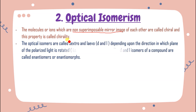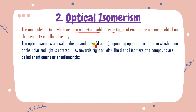For optical isomerism to be shown, there must be non-superimposable mirror images and chirality. The optical isomers are called dextro and levo. In organic chemistry we have R and S (rectus and sinistro), but here we will find optical isomerism only in terms of dextro and levo since that is experimental.